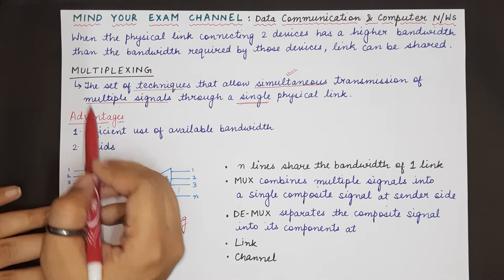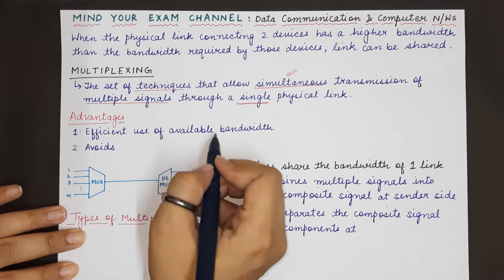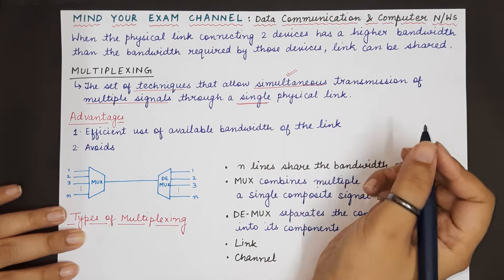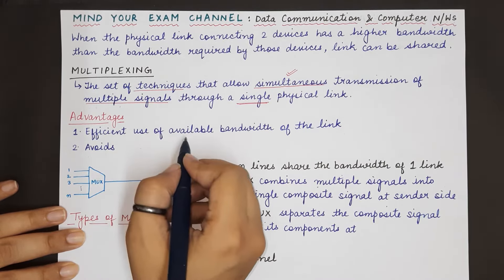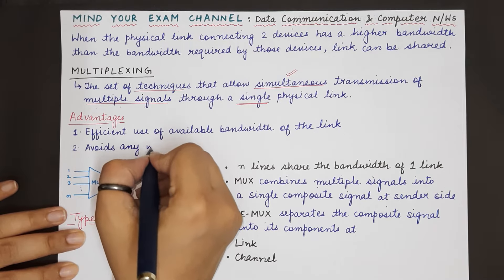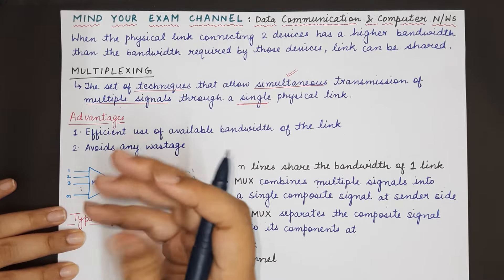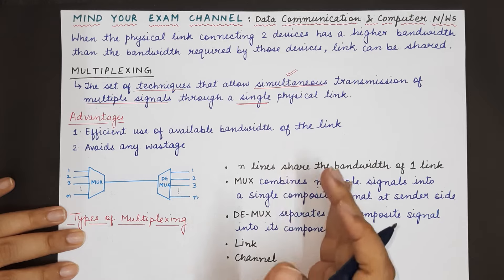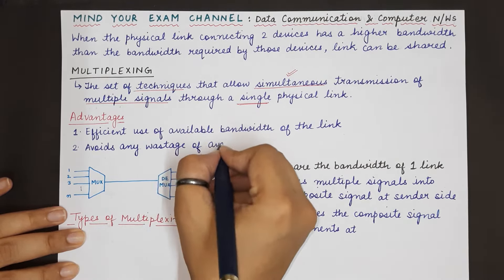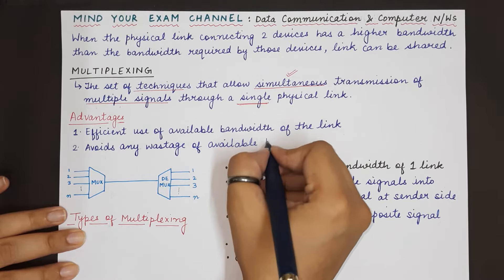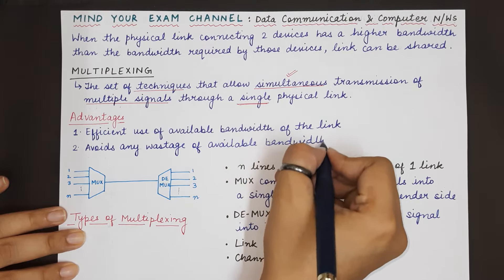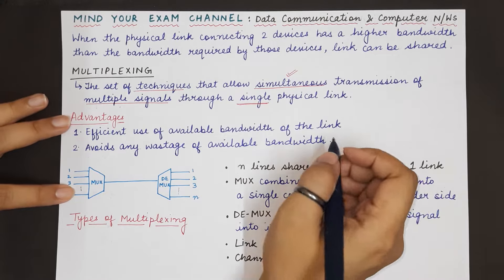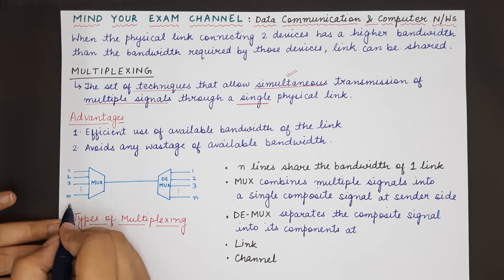The first advantage of implementing multiplexing is the efficient use of the available bandwidth of the physical link, which was not being completely utilized earlier. Efficient use of bandwidth avoids wastage and leads to resource or bandwidth sharing, where multiple devices share the same link and ultimately share its bandwidth. This is important because bandwidth is one of the most critical resources in network communication for proper data transmission.